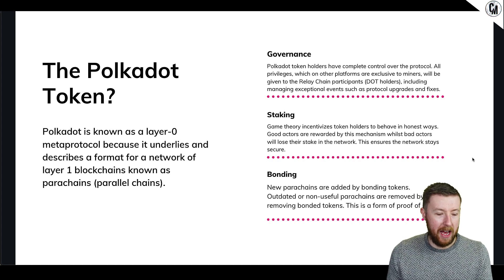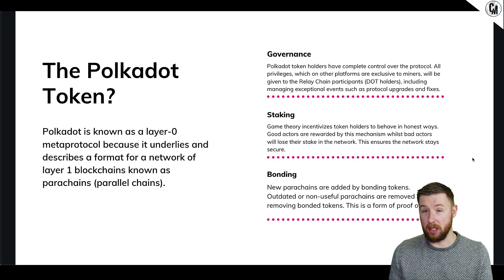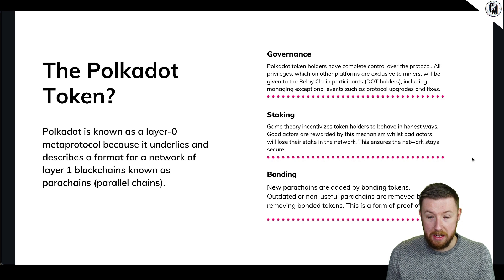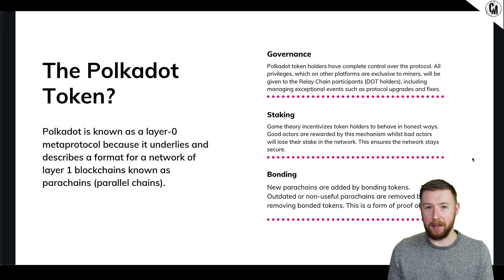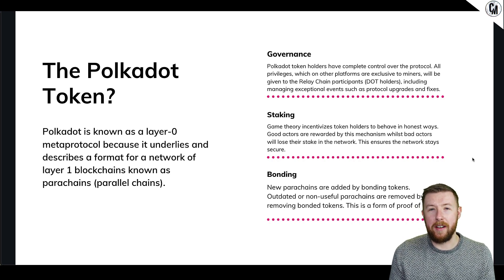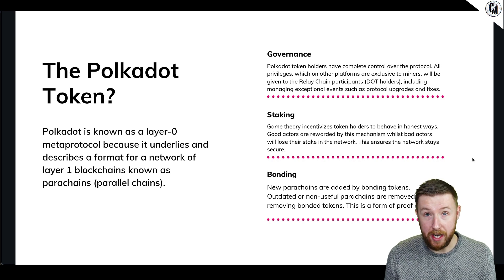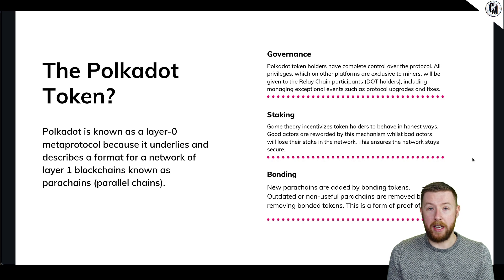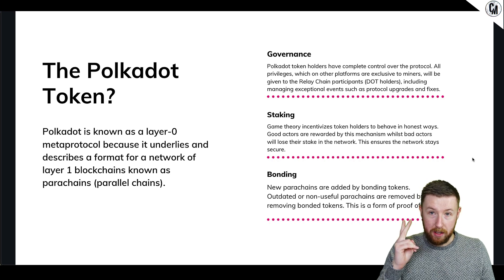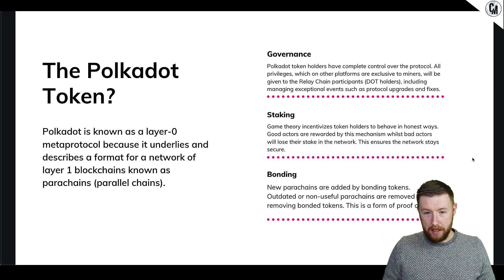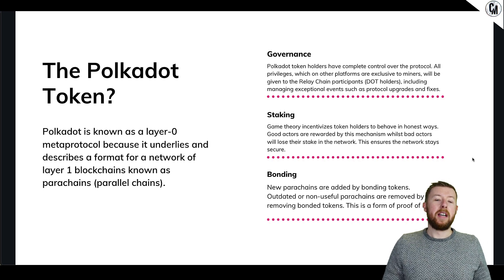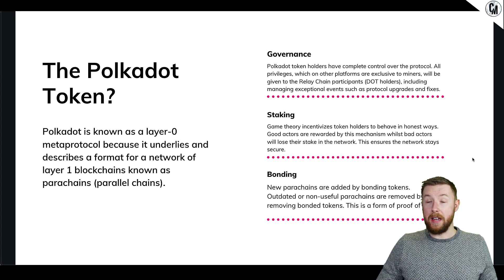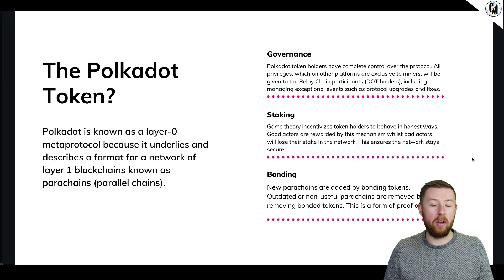A layer one blockchain is the likes of Solana, Avalanche, Ethereum - there's loads of them - but they've got one limitation: they can only build on themselves. Whereas with Polkadot you can have multiple multi-chain blockchains as individual sovereign chains, which will enable layer one, layer one two, layer one three, layer one four all the way around the whole ecosystem, and each one of those will have dApps on it.